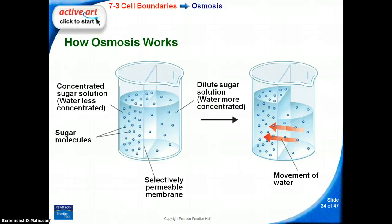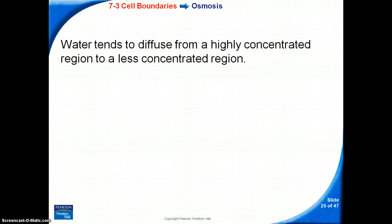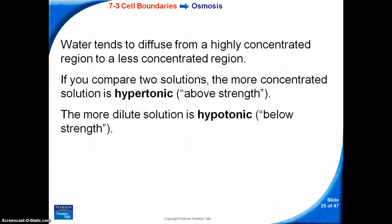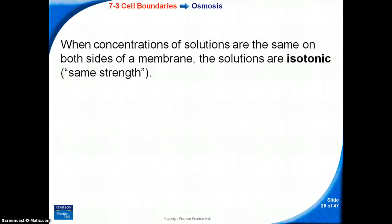How osmosis works: a concentrated sugar solution is separated from dilute sugar water by a selectively permeable membrane, and water moves across it. Water tends to diffuse from a highly concentrated region to a less concentrated region. If you compare two solutions, the more concentrated solution is hypertonic, meaning above strength, while the more dilute solution is hypotonic, meaning below strength. When the concentrations of solutions are the same on both sides of a membrane, the solutions are isotonic, meaning same strength.